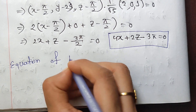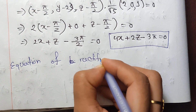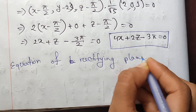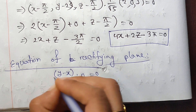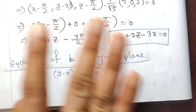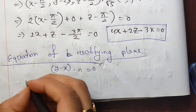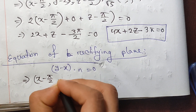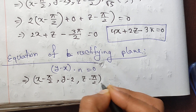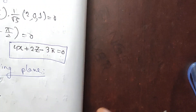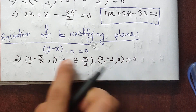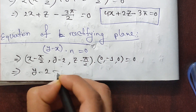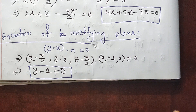Similarly, the binormal is not needed — rectifying plane. The formula here is (Y − X) · N = 0. Using this formula with N substituted: the x, y, z values at the point give the rectifying plane equation.